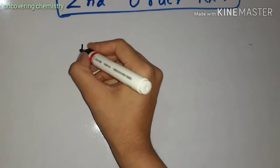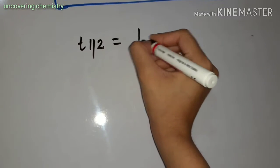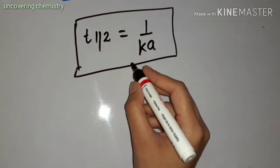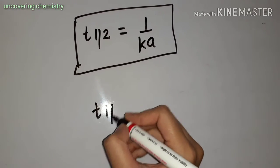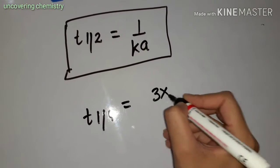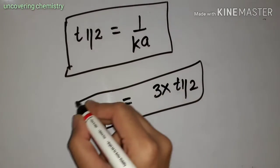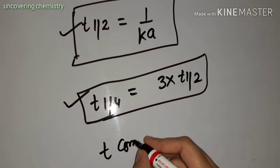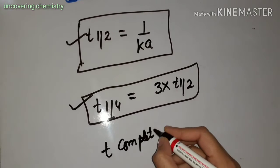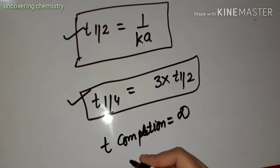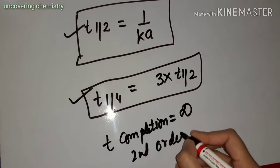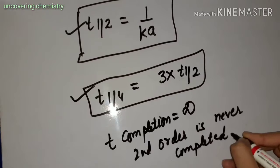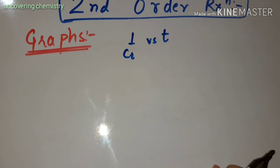Now comes the half-life period for the second order reaction. The half-life for the second order reaction is derived from the integrated rate law. This gives the formula for the half-life, and similarly we can derive the formula for the quarter-life period of the second order reaction.